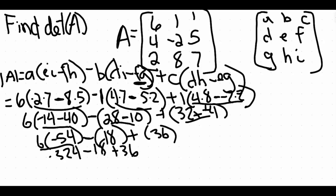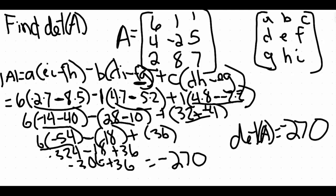Now we add and subtract: negative 324 minus 18 is negative 306, and then adding 36 gives us negative 270. So the determinant of our matrix is equal to negative 270.